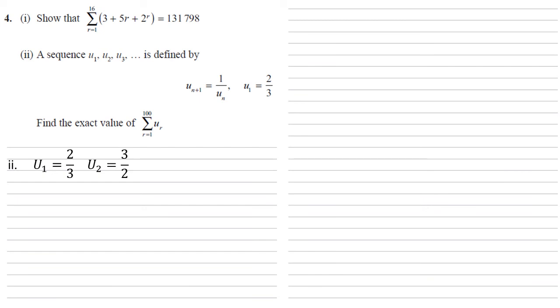u3 would equal 1 over this, so back to 2 thirds again. u4 is 1 over that, which is 3 over 2, etc. We can see that our sequence is just flipping between 2 over 3 and 3 over 2.